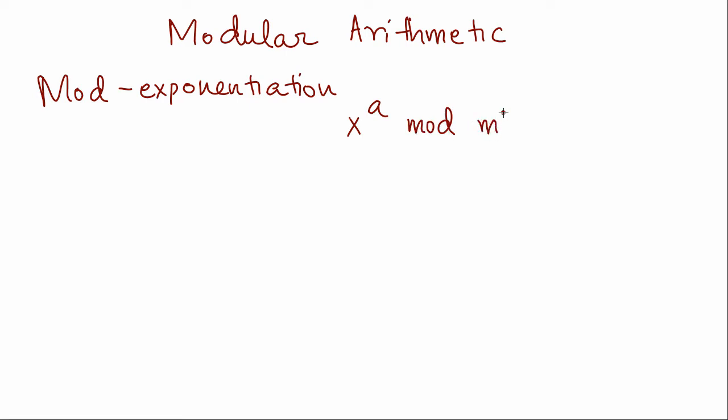For example, if we have to calculate 3 to the 5 mod 7, we just use repeated squaring. So we write it as 3 times 3 to the 4th mod 7, which is 3 times 3 squared the whole square mod 7.